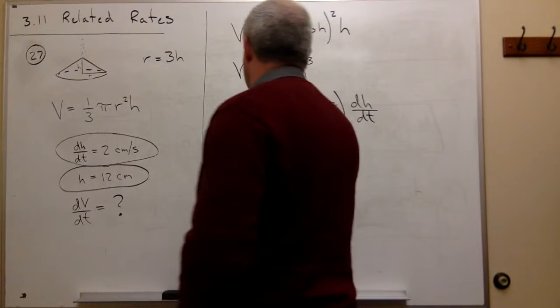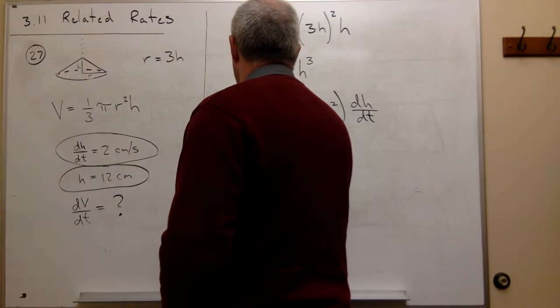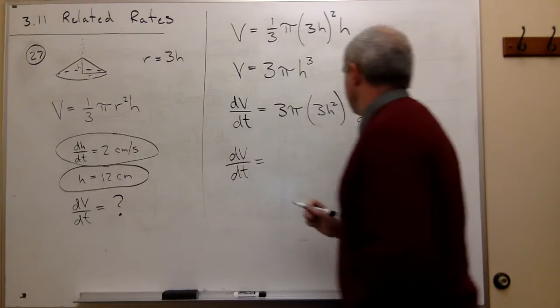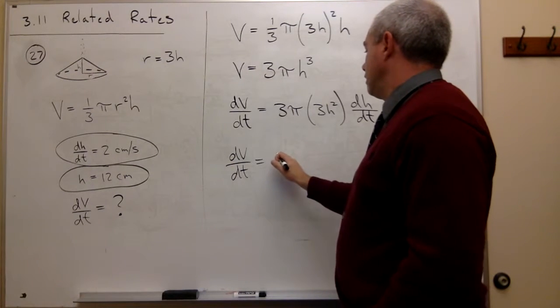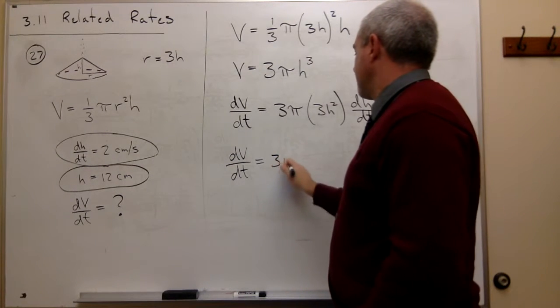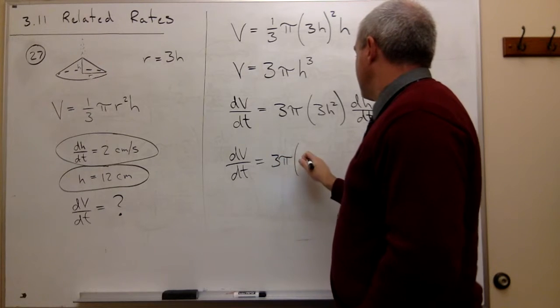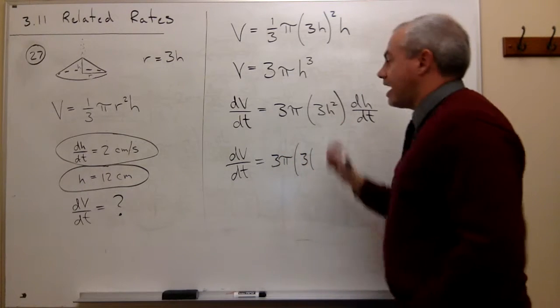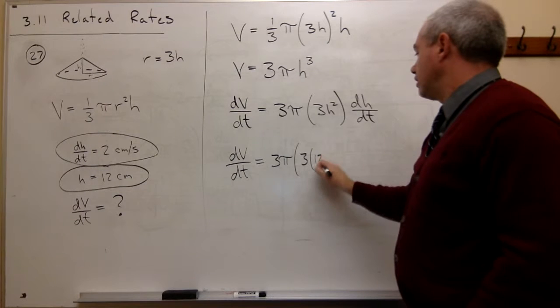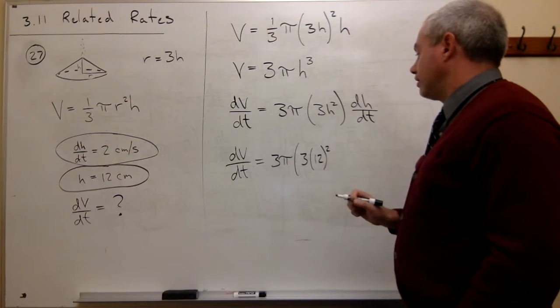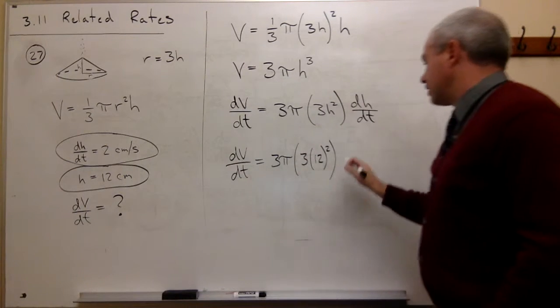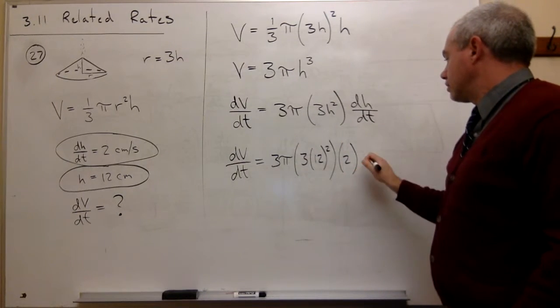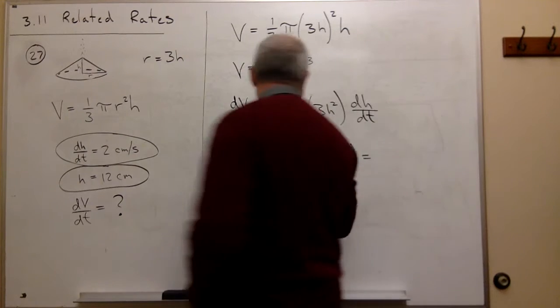and the h is 12. So let's go ahead and plug those in and see what comes out. So dV/dt is equal to three pi